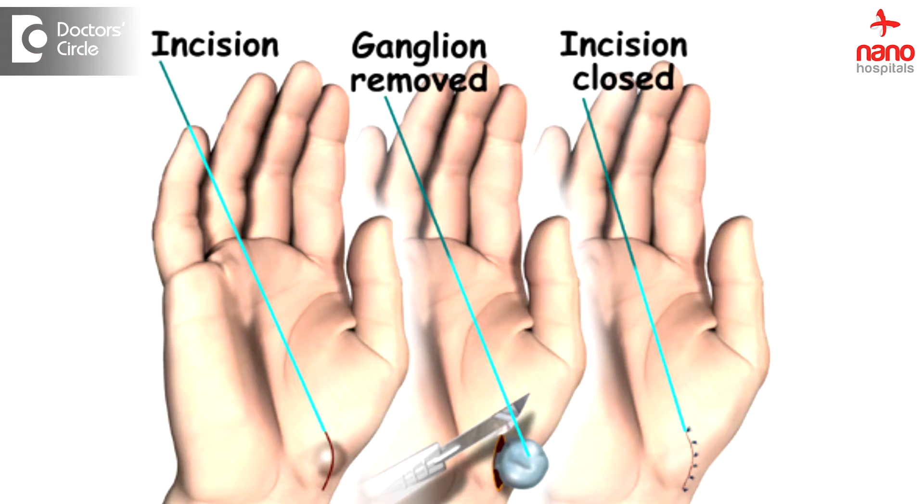Coming to the management of dorsal wrist ganglion, which is the commonest one — it can be managed initially and symptomatically with anti-inflammatories and then relative immobilization of the wrist with some braces. And then, if it is not healing, there are ways and methods to evaluate any instabilities within the carpal bones. If there are obvious instabilities, that has to be looked into by a proper clinician who can deal with the carpal instabilities.